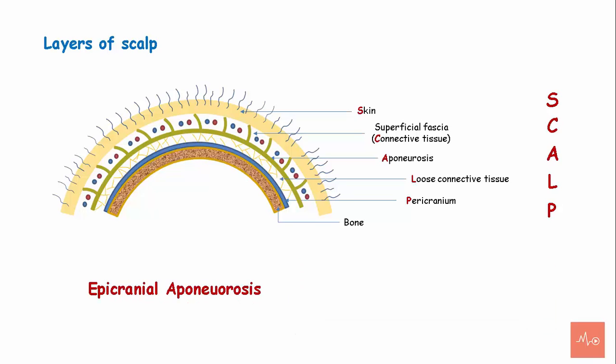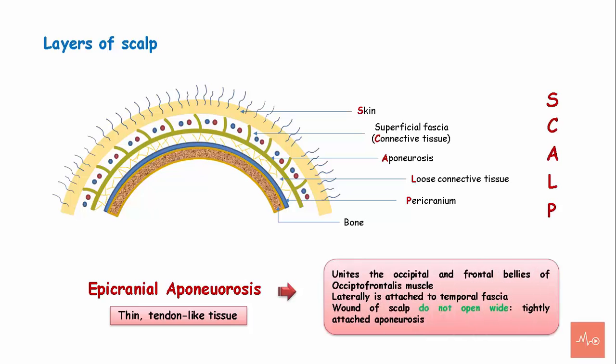The epicranial aponeurosis is a thin layer, like a tendon. It unites the occipital and frontal bellies of the occipitofrontalis muscle and is attached laterally to the temporal fascia. Since the aponeurosis is tightly attached to the muscle, wounds of the scalp do not open wide.